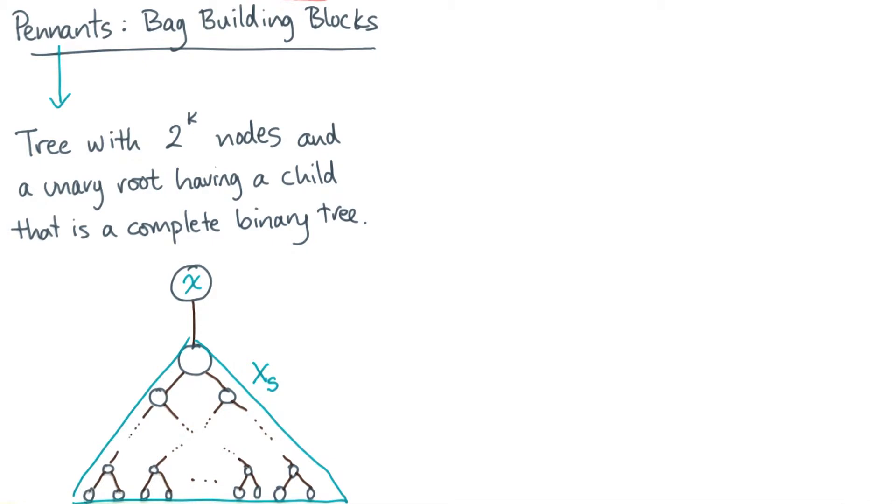Now suppose I give you a second pennant. This pennant has a root node little y and a child subtree capital Y sub s. And let's further suppose that these pennants have exactly the same size, even though I haven't really drawn them to scale.